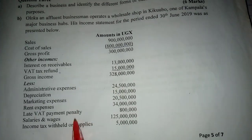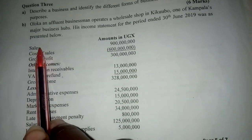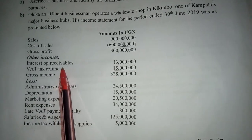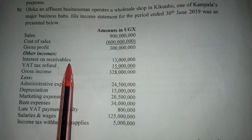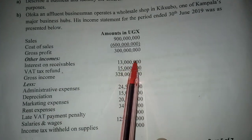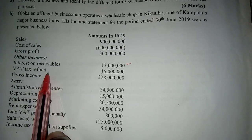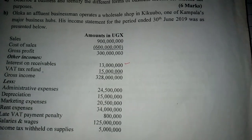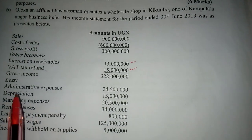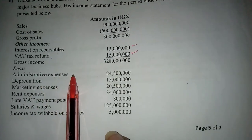Looking at the income statement, we leave the sales, cost of sales, and gross profit as they are. Starting from the other income items: interest on receivables is taxed and it was already added, so we leave it. VAT tax refunds are also taxed and they were added, so we leave them as well.